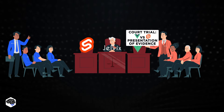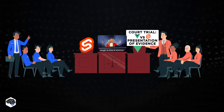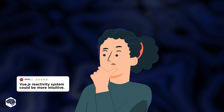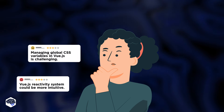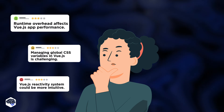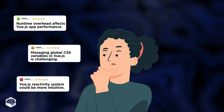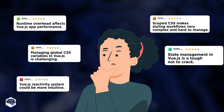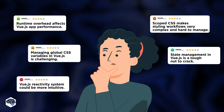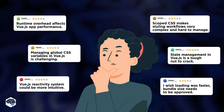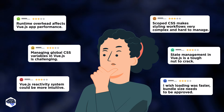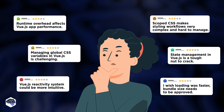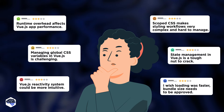So what accusations did Jelvix developers bring to the court against each of the frameworks? Framework-specific syntax, scoped CSS complexity, Vue reactivity system, managing global CSS variables, and state management — all these processes are claimed to be not easy to handle in Vue compared to Svelte, especially for newcomer developers. There's also a range of factors affecting Vue app performance: runtime overhead, bundle size, initial load performance, building the runtime, and others.